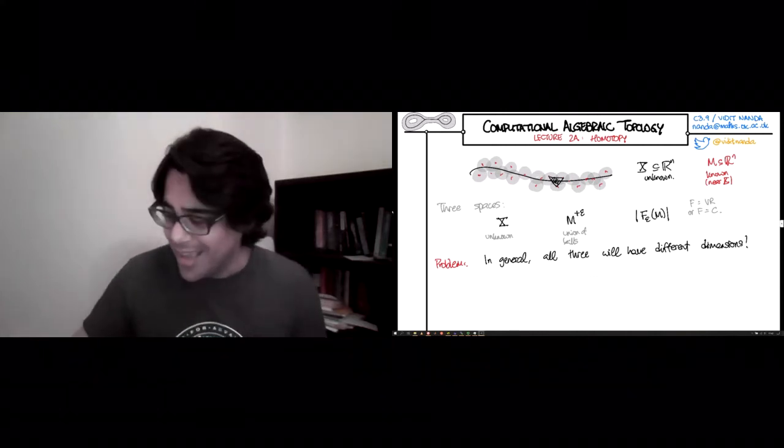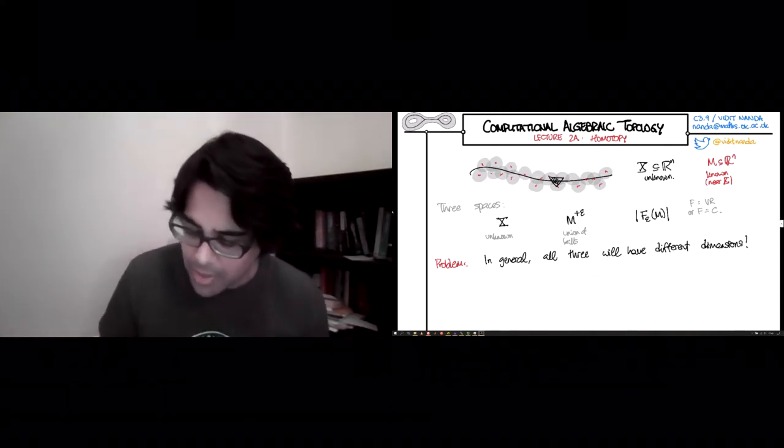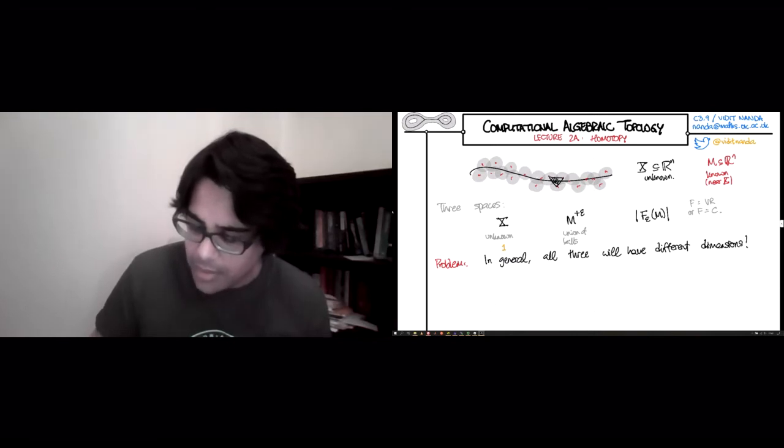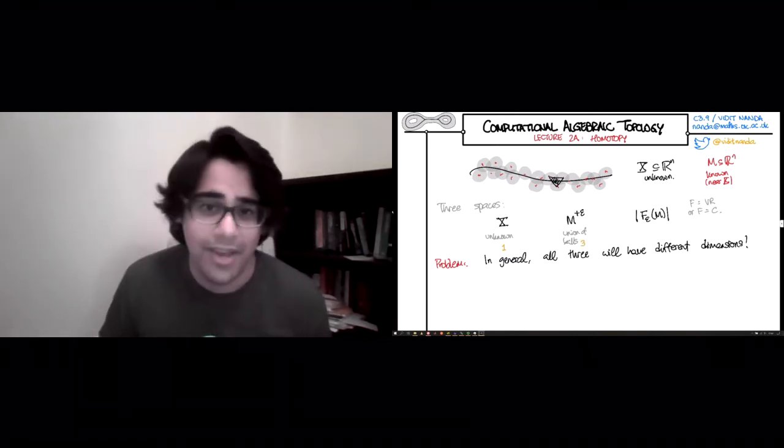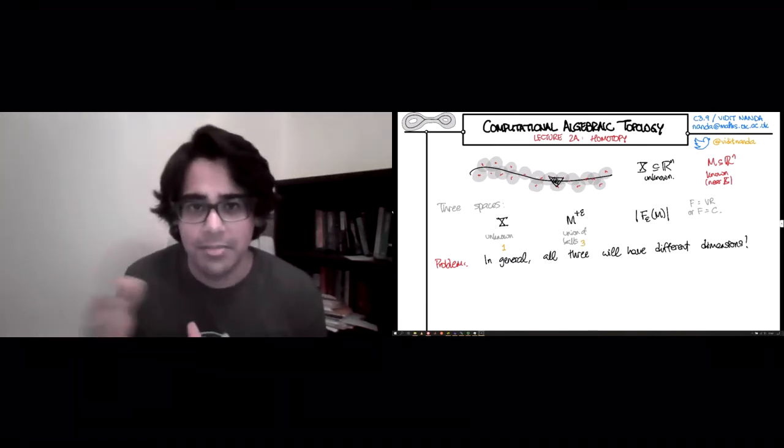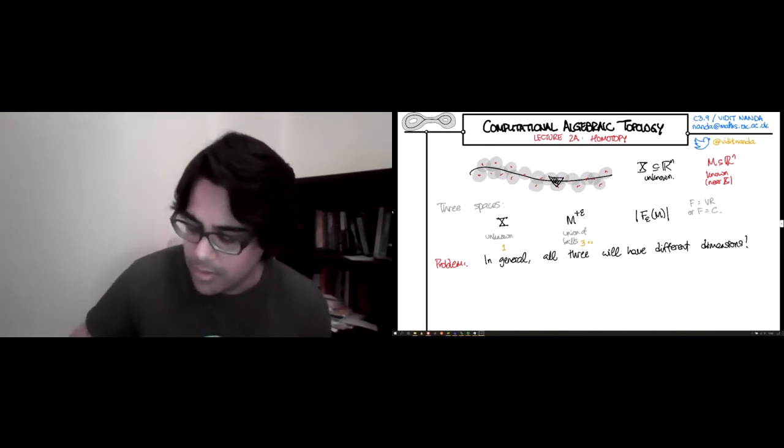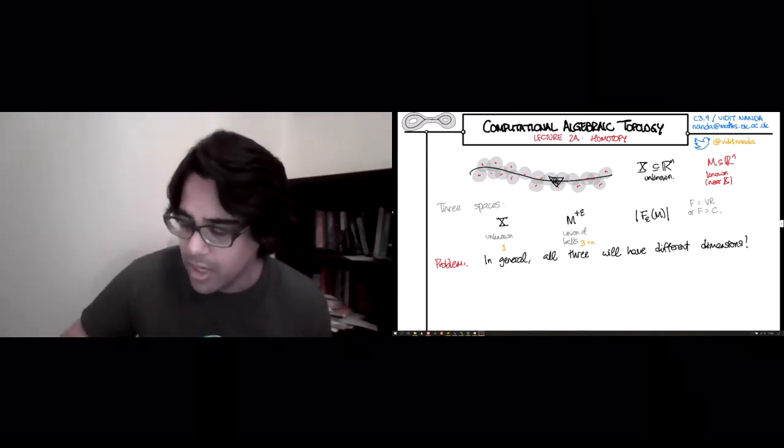So in the picture that I have drawn, the dimension of X is one, the dimension of the union of balls is three. In fact, it could be whatever larger thing, but let's imagine this whole thing is living in R^3. This is n. And the dimension of the Čech complex or the Vietoris-Rips complex is going to be two.